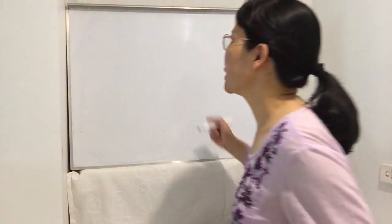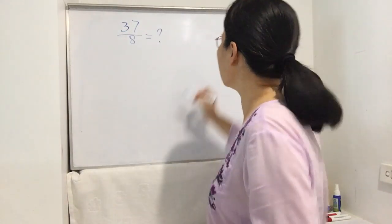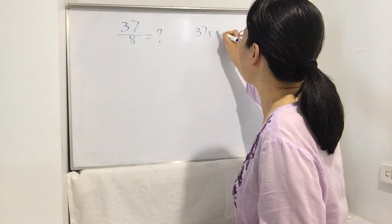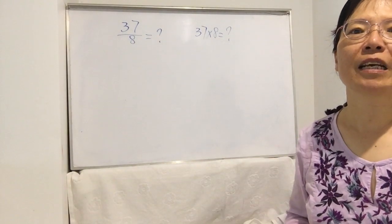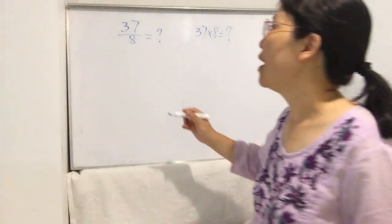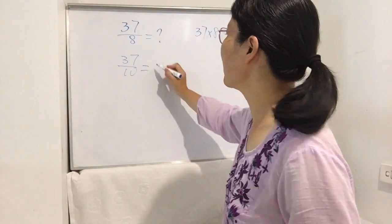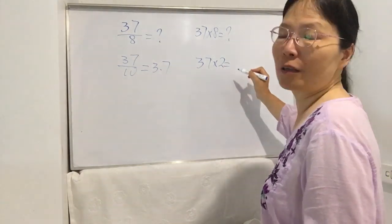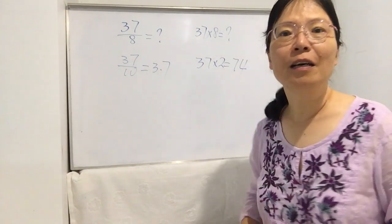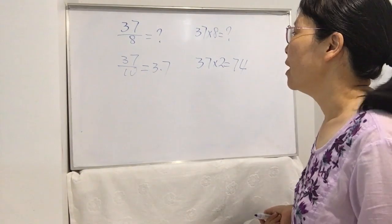Now let's start. Suppose I ask you to do 37 divided by 8 — how much is the answer? I think you need at least a few seconds to work out the answer. But if I ask you to do 37 divided by 10, you may in half a second work out the answer: 3.7. And 37 times 2 equals 74 — you can work that out very fast because dividing by 10 and multiplying by 2 is very easy.